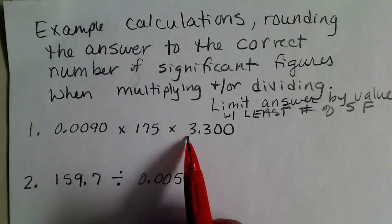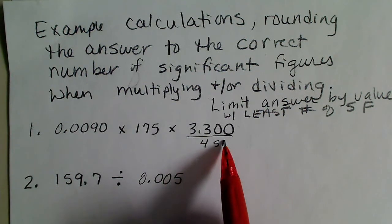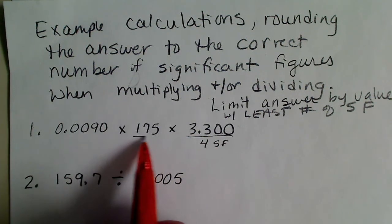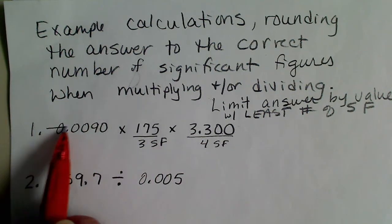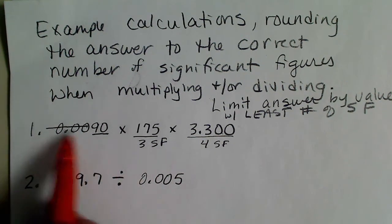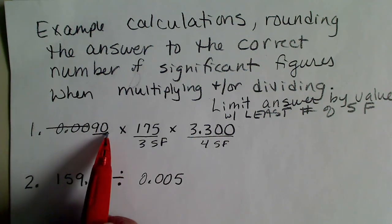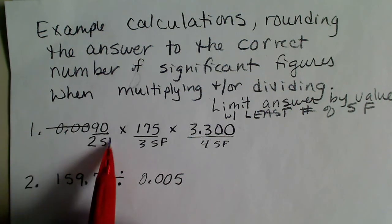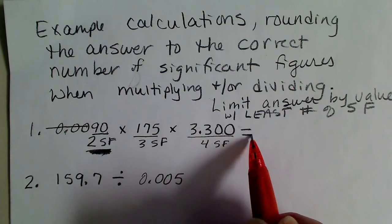If we look at this value, it has four significant figures — those zeros are significant because of the decimal. This value has three significant figures, and this value only has two. We always cross out all of the leading zeros, and the zero at the end of a number is only significant because of the decimal. So this has two significant figures, meaning our answer is going to be limited to two significant figures.